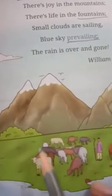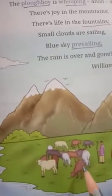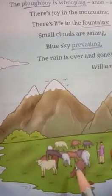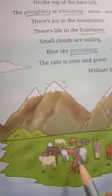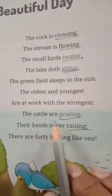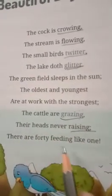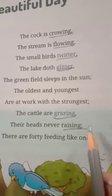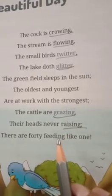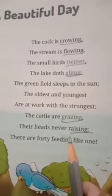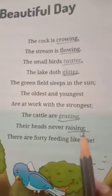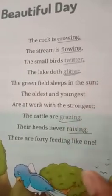There are so many cattle — when they are eating their food together, they are all looking like one, like one cow is eating the food. So "there are forty feeding like one" means when you see the cattle together eating the food, they look like one. Understood, children?